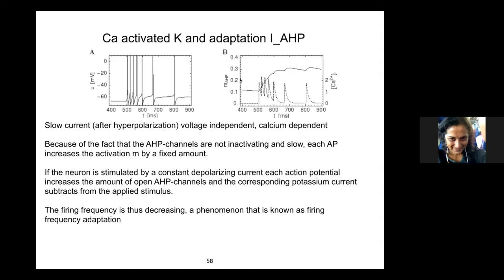There's another particular channel I feel I should go over in some detail: the calcium-activated potassium channel. This is a very useful channel — extremely important in generating rhythms. You'll look at CPGs, central pattern generators, and think about this channel. It's a potassium channel, but unlike all the channels we've looked at so far, this one does not depend on voltage; it depends on calcium.